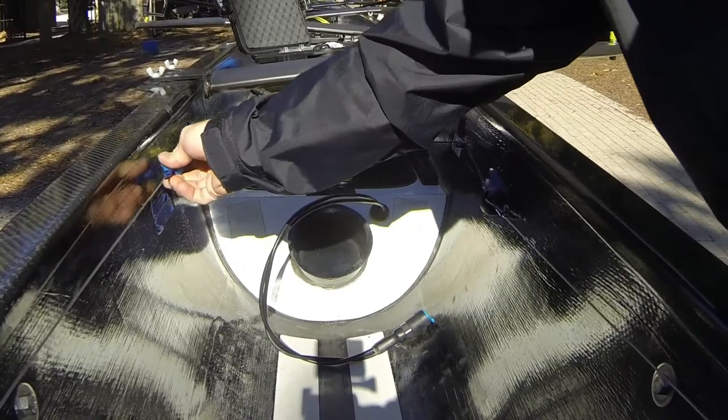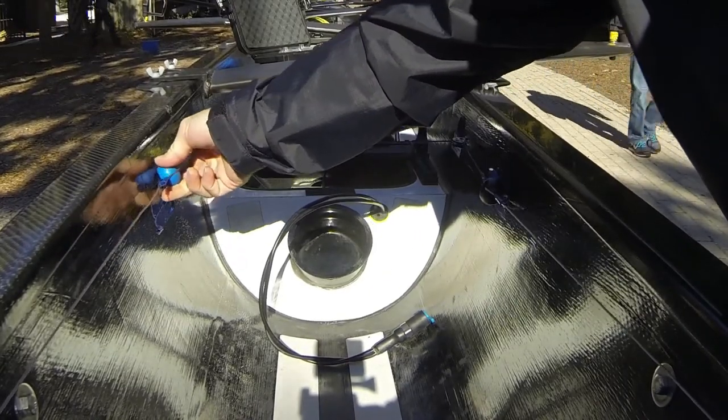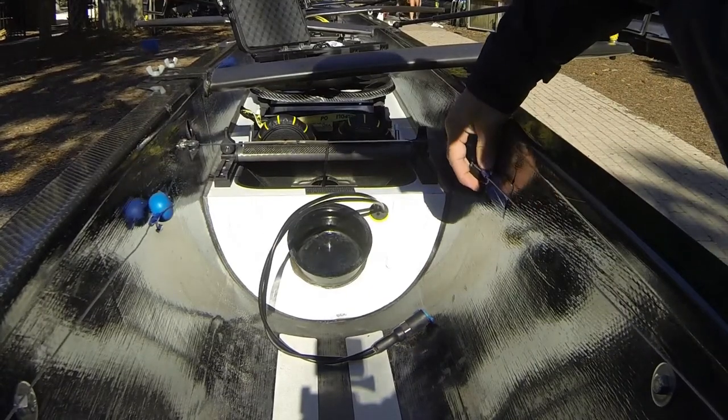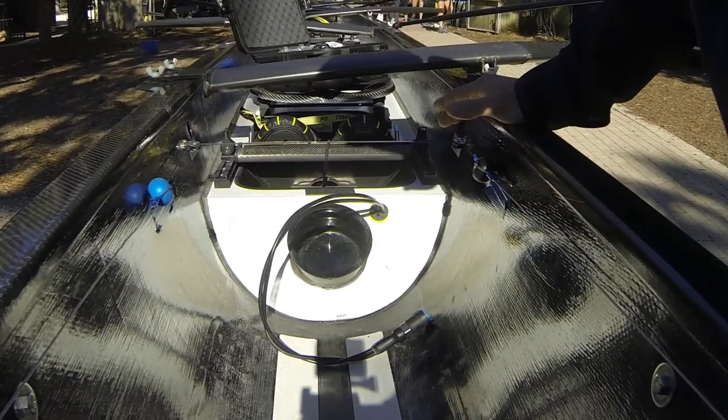When you push your left hand forward the stern of the boat actually goes to the right and the boat will track left then. Pushing your right hand forward would push the stern of the boat to the left making the boat track to the right.